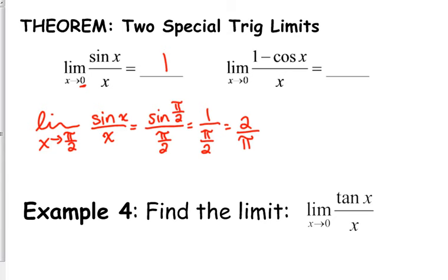The other one, the limit as x approaches 0 of 1 minus cosine of x over x is 0. That limit is 0. You've just got to have those memorized, be able to do it without a calculator.